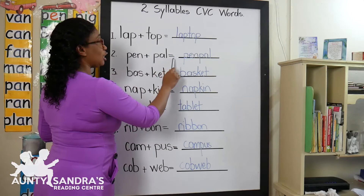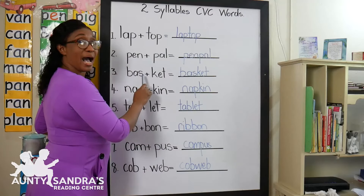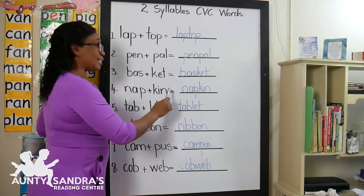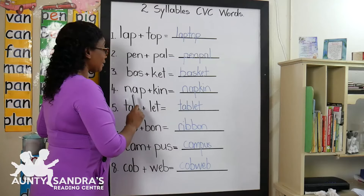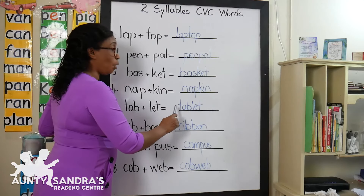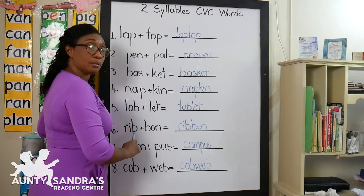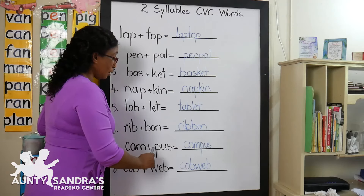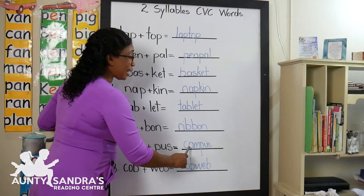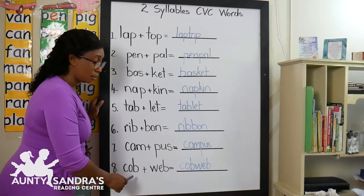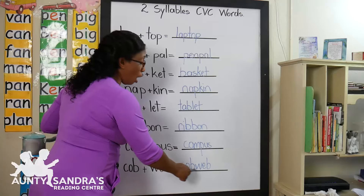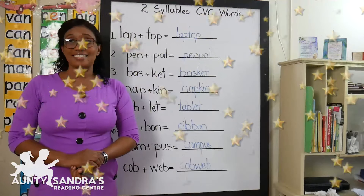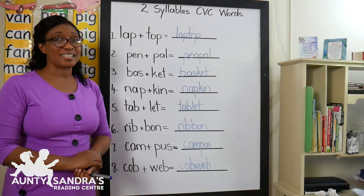Pen plus Pal equals penpal. Bas plus Ket equals basket. Nap plus Kin equals napkin. Tab plus Let equals tablet. Rib plus Bon equals ribbon. Give yourselves a round of applause, children. You did great. All I need you to do now is to keep practicing.